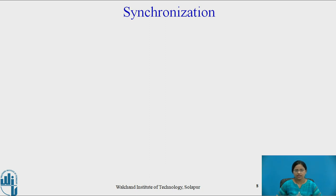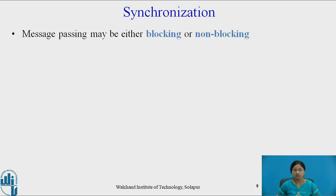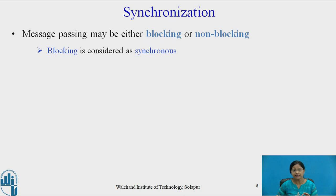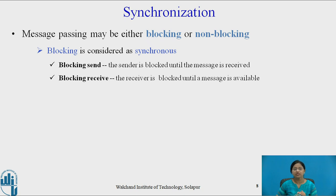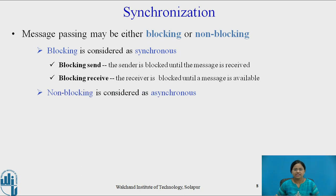Now let us see synchronization. In inter-process communication, processes communicate using send and receive primitives, which can be implemented in different ways. Message passing using send and receive may be either blocking or non-blocking. Blocking is considered synchronous and has two types: blocking send, where the sender is blocked until the receiver receives the message, and blocking receive, where the receiver is blocked until a message is available.